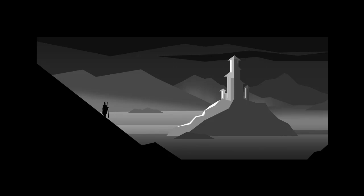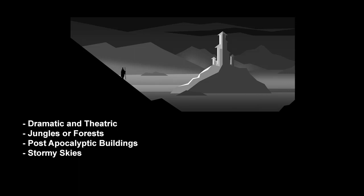Now let's move on to dark foreground, light mid ground, and dark background. For this type, imagine a spotlight illuminating the middle ground. This feels very dramatic and theatric — similar to a stage play where the audience is in the dark foreground, the rear of the stage is also kind of dark, and the actors in the mid ground are illuminated with a single spotlight. This is also really good for jungles or forests where light creates patches of illumination between the tree canopy, or a post-apocalyptic building where holes reveal shafts of light coming through. It's also great for stormy skies.